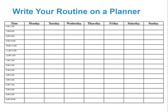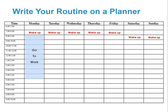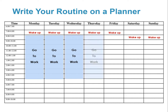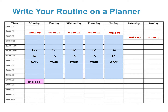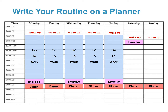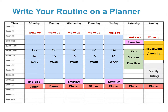Now write the activities that you do regularly each day for one week. For example, the time that you get up in the morning, go to work, exercise, eat dinner, and other activities in your routine. Now you can see your weekly routine and the time you need for these activities.